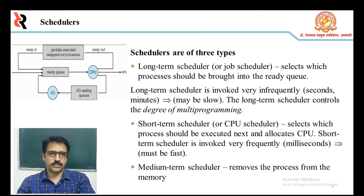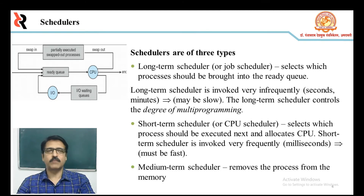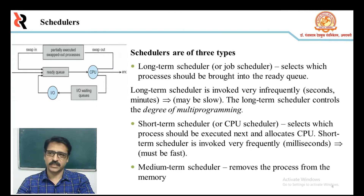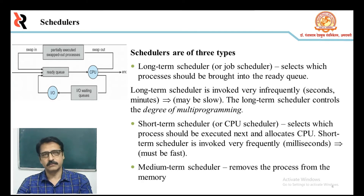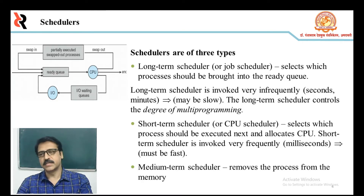The short-term scheduler is also called the CPU scheduler. Its main objective is to increase system performance in accordance with chosen criteria. It handles the change from ready state to running state. The CPU scheduler selects from among the processes that are ready to execute and allocates the CPU to one of them. The short-term scheduler, also known as the dispatcher, executes most frequently and makes the fine-grained decision of which process to execute next. It is faster than the long-term scheduler.